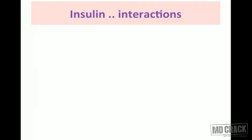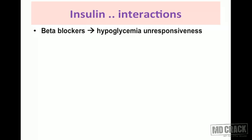Now let's discuss drug interactions of insulin. For a diabetic patient on insulin, it is essential to know what other drugs they are receiving. Most importantly, beta blockers — when combined with insulin — can produce a very dangerous situation. If a patient on insulin develops hypoglycemia, the body normally responds through sympathetic activation, producing tachycardia, palpitations, sweating, and tremors as warning signs.